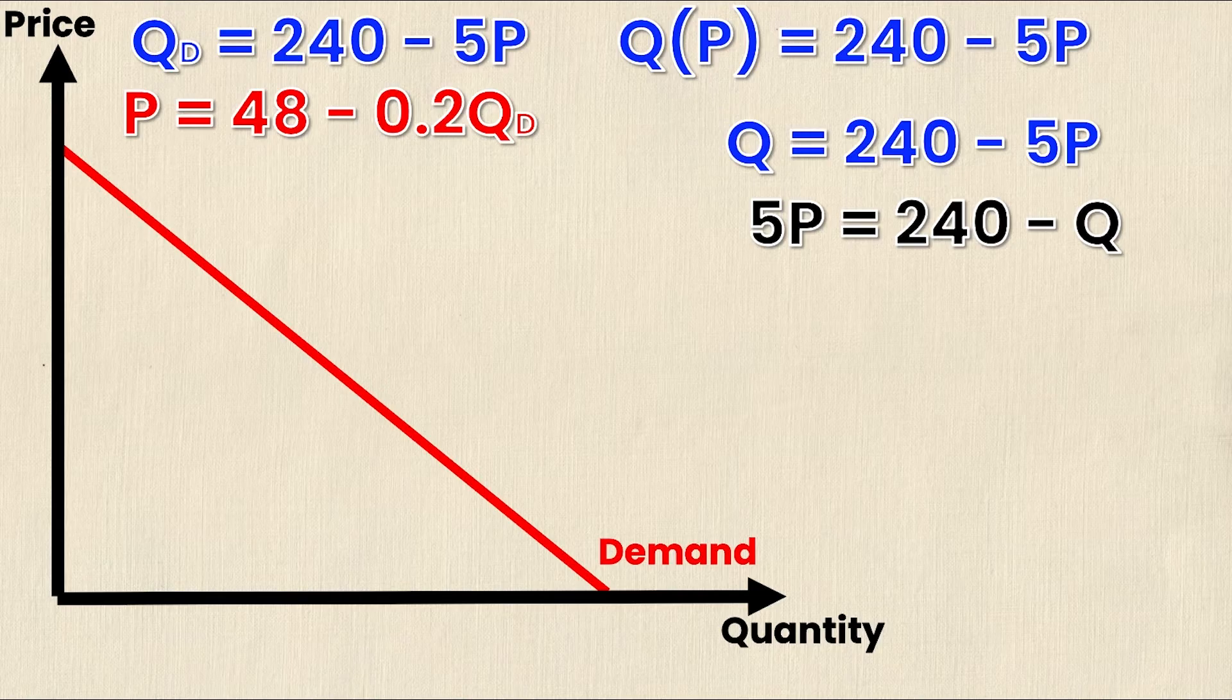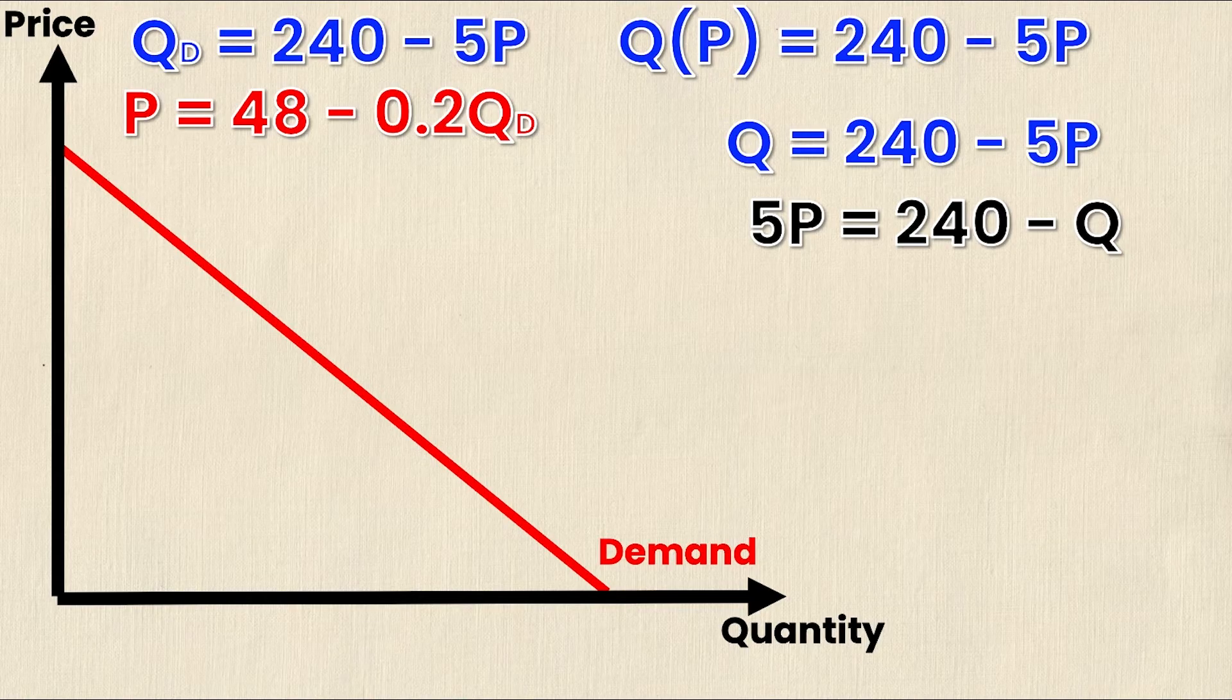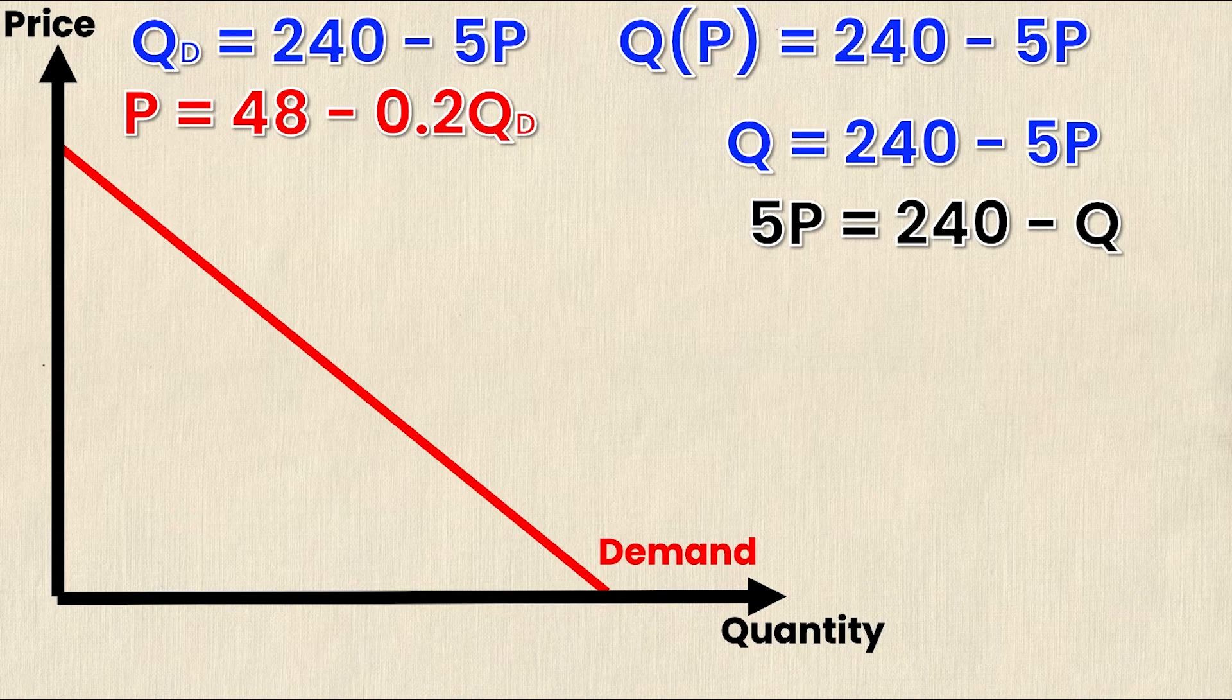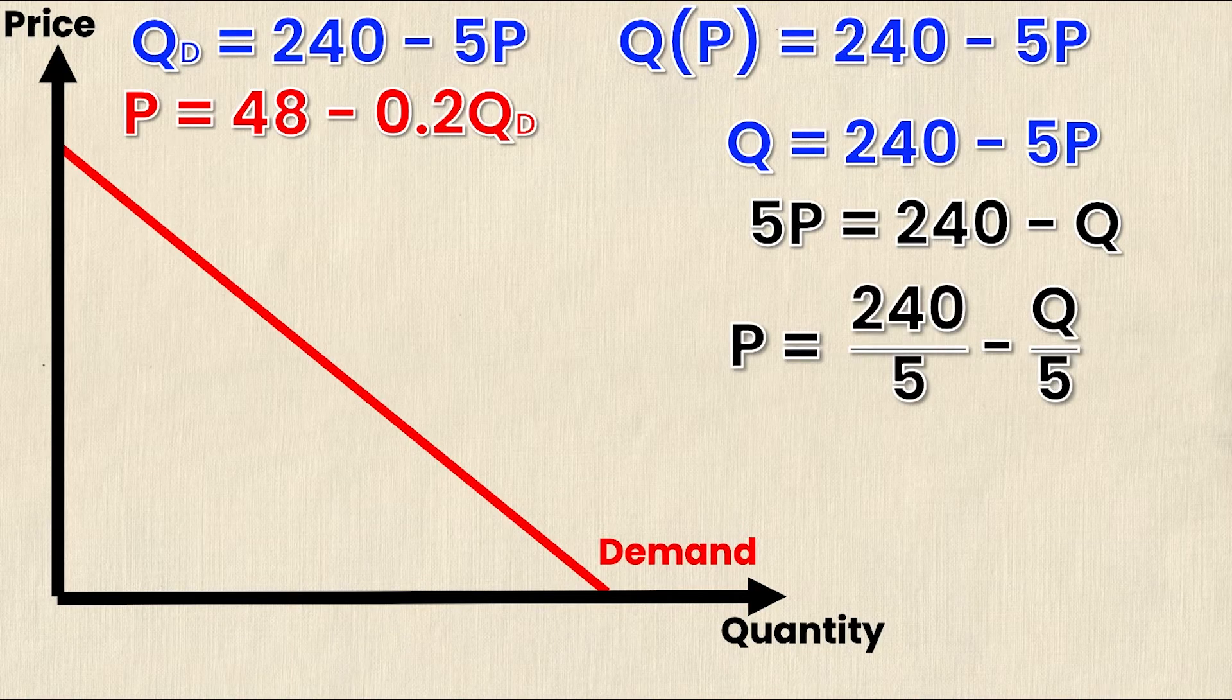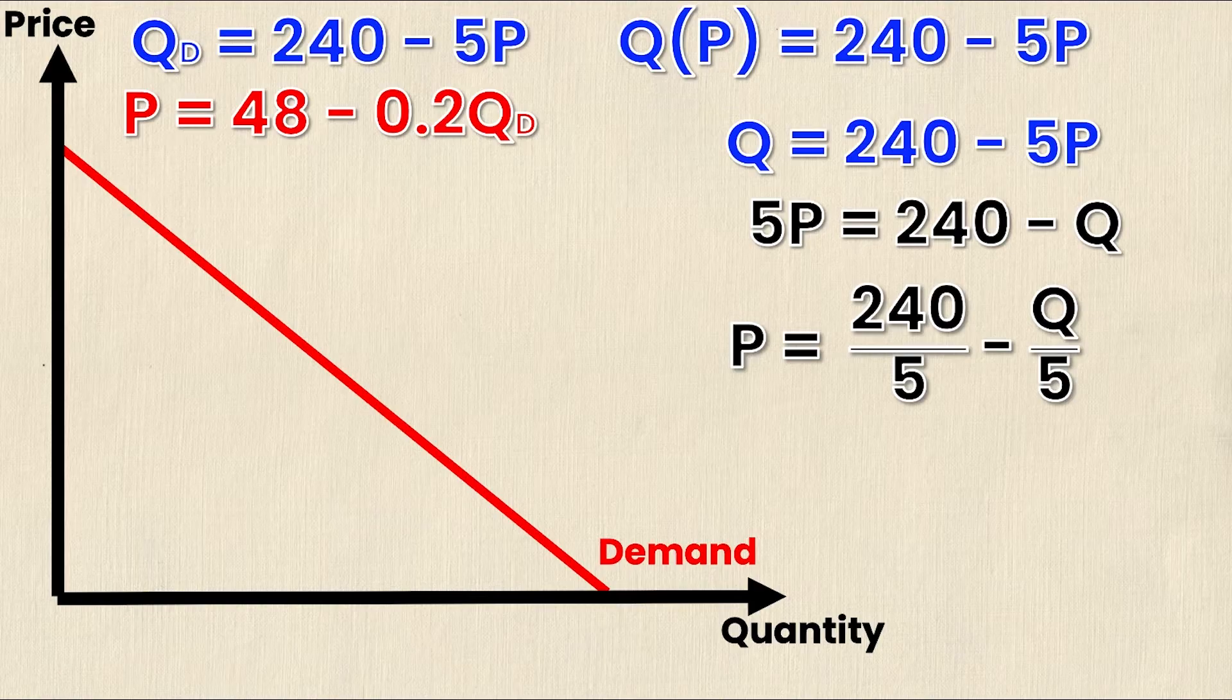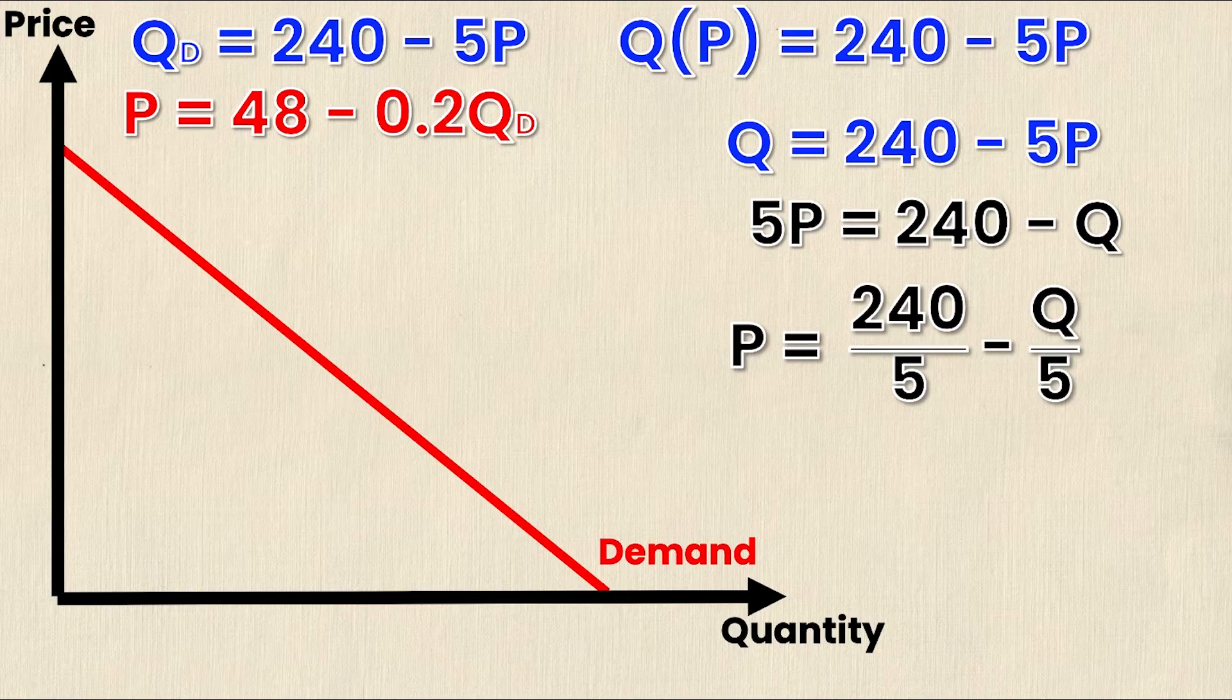P is not quite by itself—it's being multiplied by 5. To get rid of that, I'm going to divide every term by 5. So 5P divided by 5, 240 divided by 5, and Q divided by 5. That yields P equals 240 divided by 5 minus Q over 5. The 5P divided by 5 is just P.